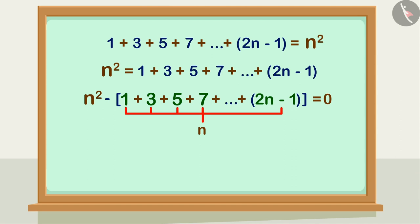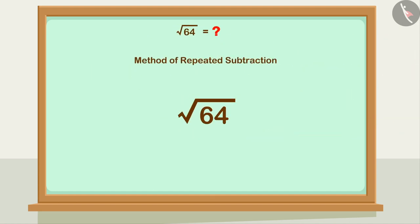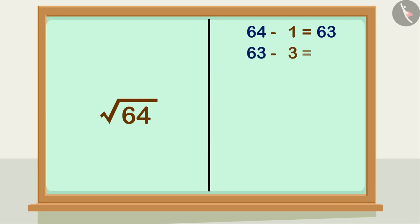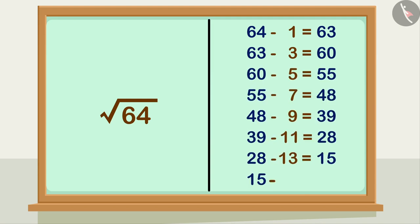So we subtract odd numbers starting from 1 and see how many consecutive odd numbers have to be subtracted to reduce the number to zero. The number of consecutive odd numbers required to reduce it to zero is the square root of the given perfect square number. For example: 64 minus 1 equals 63, then 63 minus 3 equals 60, and so on.